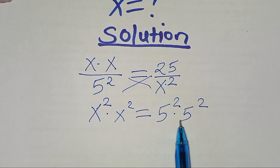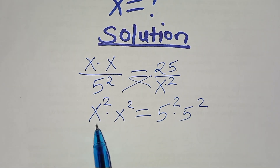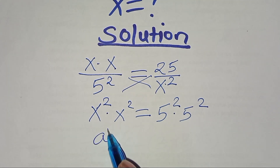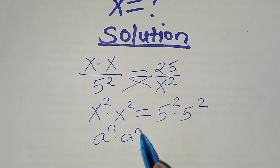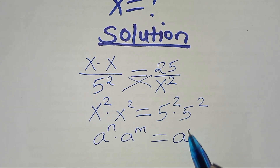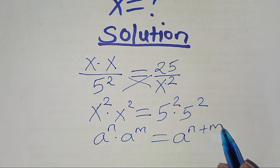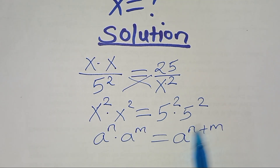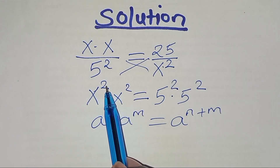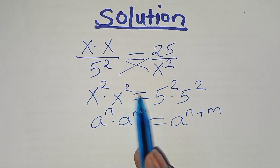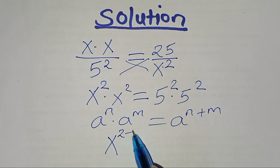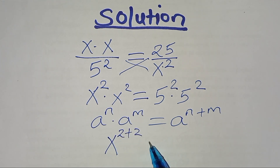As you can see, x squared times x squared is in the form of a to the power n multiplied by a to the power m, which we can express as a to the power n plus m. Applying this property, x to the power 2 times x to the power 2 becomes x to the power 2 plus 2.